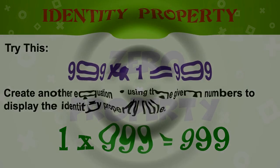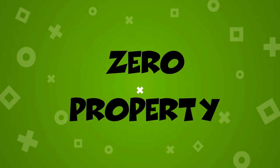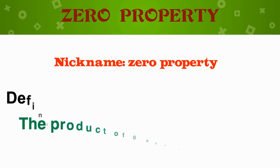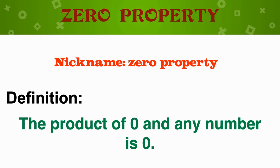Let's look now at the zero property. The property of zero is just as it says — the property of zero. That means that the product of any number and 0 is always 0, and the product of 0 and any number is always also 0.